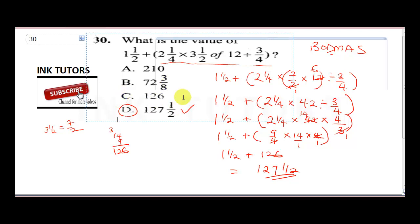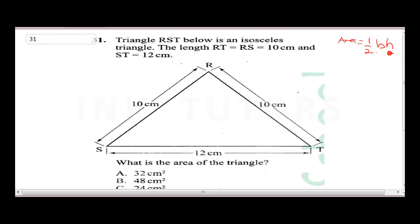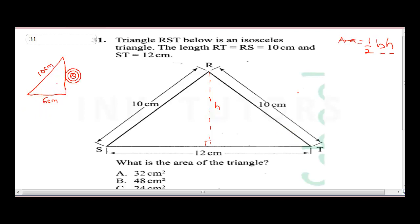The next question involves triangle RST, which is an isosceles triangle. The length RT equals RS equals 10 cm, and ST equals 12 cm. Find the area of the triangle. The formula for area is half times base times height. The base is 12. The height is not given — this is the perpendicular height. Since it's an isosceles triangle, we can divide it in two to get a 90-degree angle, giving half the base as 6 cm.